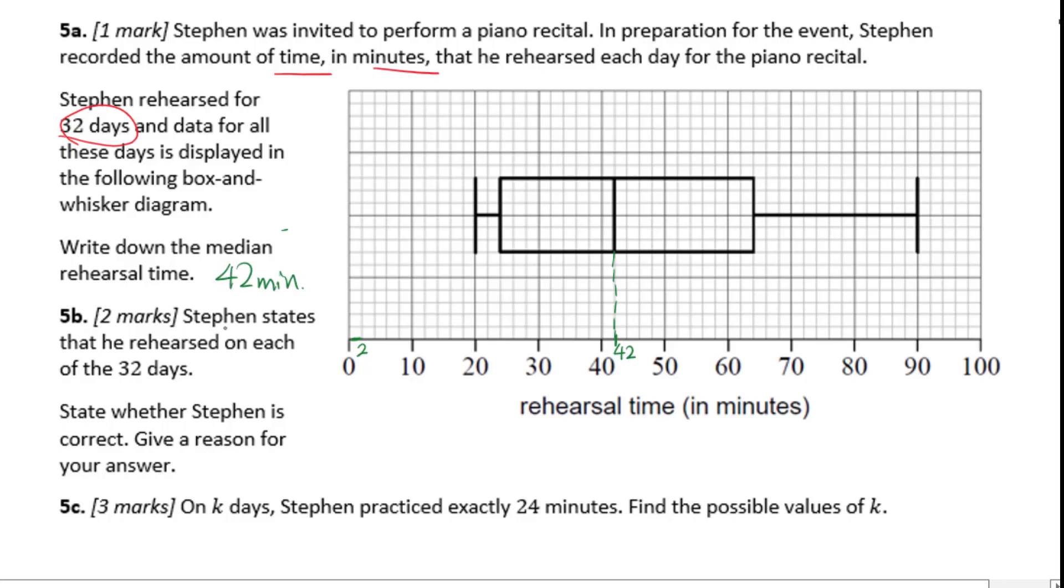For 5B, Stephen states that he rehearsed on each of the 32 days. State whether Stephen is correct. Give a reason for your answer. Stephen is correct because the minimum value that the whisker plot shows is 20 minutes.